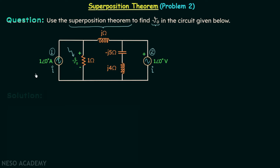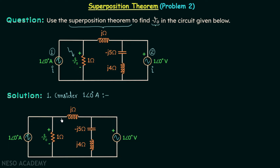We will move on to our solution and start with case number 1, in which we consider this source alone — the 1∠0° ampere source. We will replace the voltage source with a short circuit, and rename V0 to V0'. Our aim in case number 1 is to find V0', and we can find V0' if we can find the current I1 in this branch.